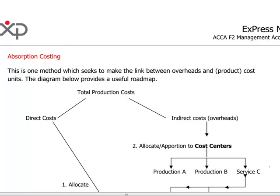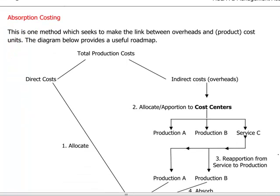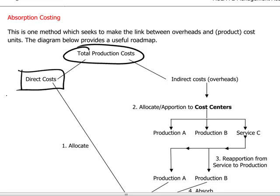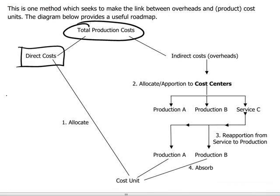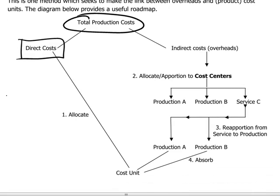We want to focus only on the universe of production costs and create a link between direct and indirect costs and the unit product itself. It may be useful to look at the following diagram to understand how we treat these production costs in a step-by-step way. Direct costs, which are directly attributable to products, are quite easy to handle — this would be direct labor and materials. There is a direct allocation process on a per-unit basis.